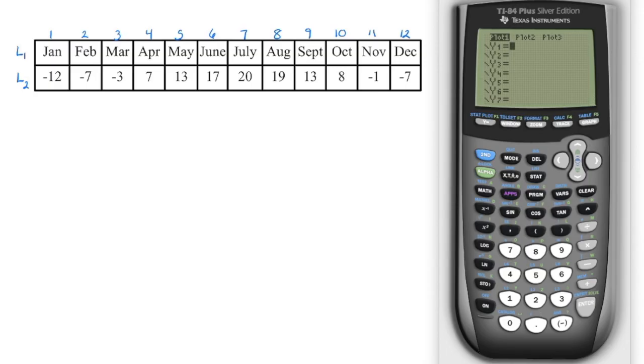Anytime we do regression, we're going to turn on the stat plot. We're going to set an appropriate window. So I'm going to go from negative one just so I can see that y-axis. And because I'm doing two cycles, I'm going to go up to 24 months with a scale of one so I can see every one month. And then I'm going to go a little bit lower than my lowest y-value and a little bit higher than my highest y-value.